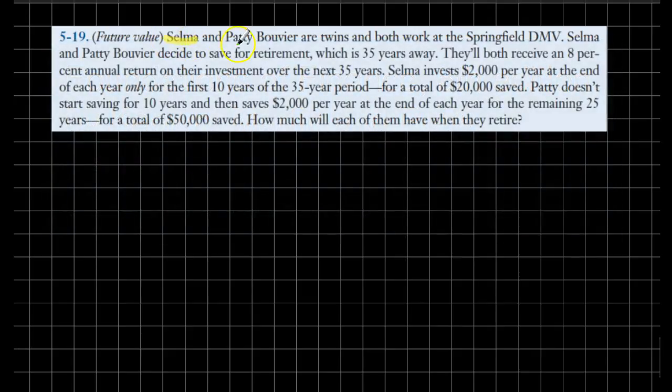We have two investors, Selma and Patty, and they have different investment plans. They are both 35 years away from retirement and both have equal access to investment opportunities over the next 35 years where they can make 8% return on their investments.